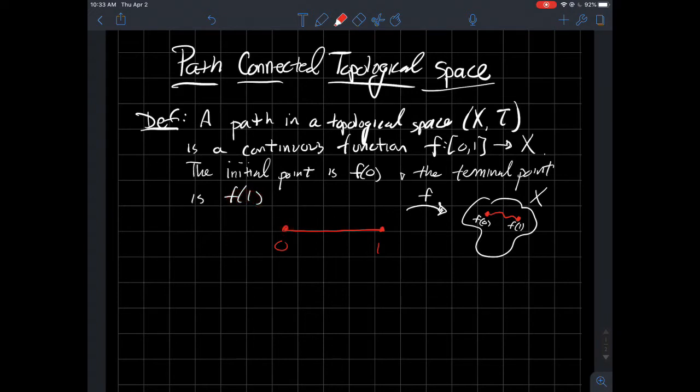Just kind of a picture, we're saying that if I've got some topological space X here, then a path from one point to another should just be some continuous function that connects these two points. And again, we'll just call f(0) the initial point, and we'll call f(1) the terminal point here.